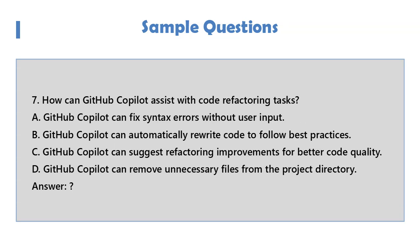Question 7: How can GitHub Copilot assist with code refactoring tasks? A. GitHub Copilot can fix syntax errors without user input. B. GitHub Copilot can automatically rewrite code to follow best practices. C. GitHub Copilot can suggest refactoring improvements for better code quality. D. GitHub Copilot can remove unnecessary files from the project directory.